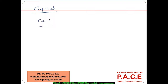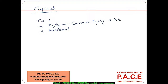Within Tier 1, we have Tier 1 equity capital and additional Tier 1 capital. The base or core Tier 1, which is the equity capital, contains only the common equity and the retained earnings of the bank. Whereas when it comes to additional Tier 1, it has brought in non-cumulative but perpetual preferred stock.